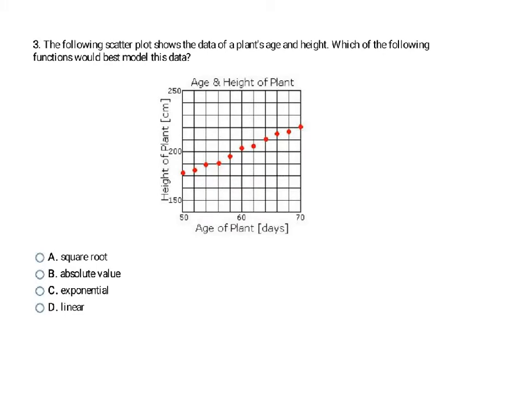This time in number three, instead of a table, they give us a graph. If it was a square root, it would have a shape like this. If it was an absolute value, it would have a V shape. Exponential would start flat and then increase. And linear would be a definite straight line. The data on this graph generally goes in a straight line, so it's going to be linear.